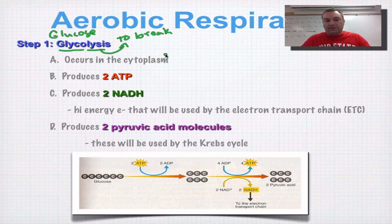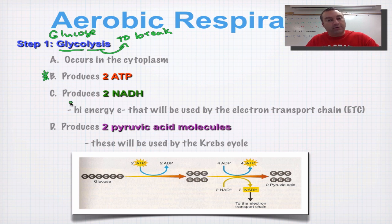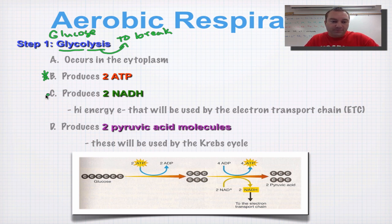When you break glucose in half, you're going to get three products, and that's where the two, two, and two come from. One of the main things you're going to get out of this is ATP. You're going to get just two, but that's important because that ATP can be used to power some of the cell's functions.